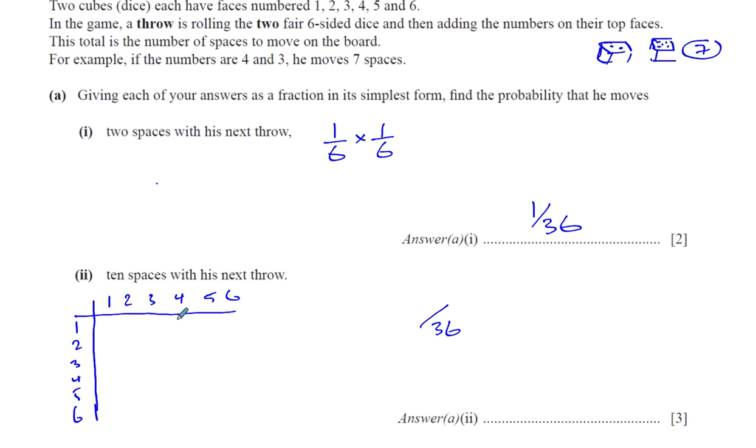And then you look at all the ways of getting a total of ten. One plus nothing will give you ten, two plus none of these will give you ten, because it only goes up to six. And the first number that might give you ten would be four, so you've got four and six, and you've got five and five. He's moving exactly ten spaces, so you've got four and six, and you've got six and four, and five and five. There's no other ways of getting a total of ten from these numbers, so there's three out of 36, which gives you 1 out of 12 in simplest form. So there we have the answer to part A, parts one and two of question number ten.